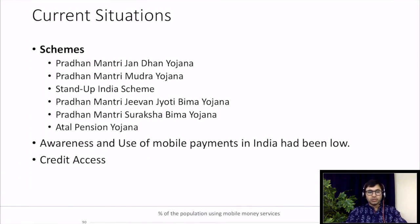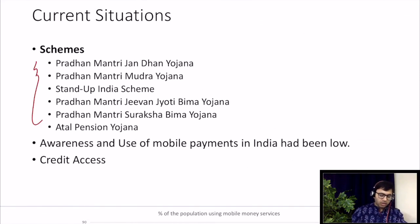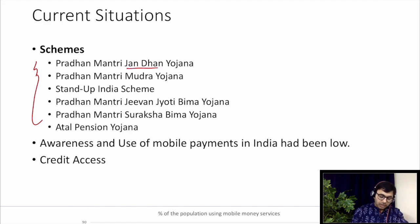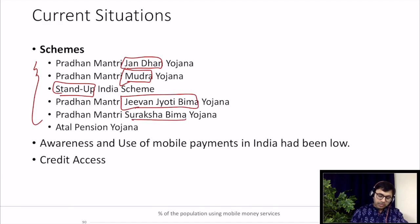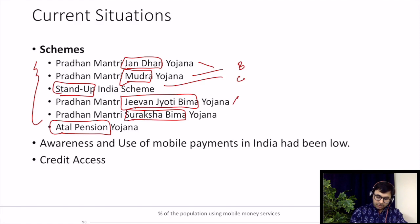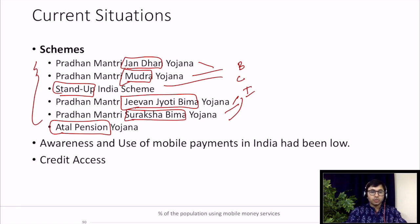Having understood the meaning of financial inclusion, let's look at the current situation with some data. This is a list of major schemes launched to improve financial inclusion: Jan Dhan Yojana related with opening more accounts, Mudra Yojana related with providing loans, Stand Up India, Start Up India, Pradhan Mantri Jeevan Jyoti Bima Yojana related with life insurance, Suraksha Bima Yojana related with general insurance, and Atal Pension Yojana related with social security. As you can see, all of these are connected with all three areas — banking services, capital markets, and insurance.